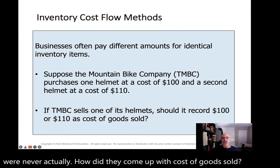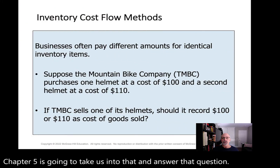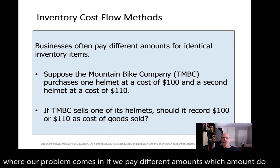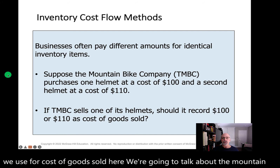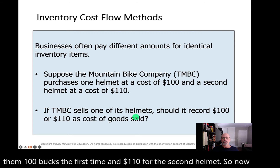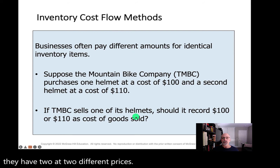Businesses often pay different amounts for identical inventory items, and this is where our problem comes in. If we pay different amounts, which amount do we use for cost of goods sold? Here we're going to talk about the mountain bike company, TMBC. They purchased one helmet and it cost them $100 the first time and $110 for the second helmet. So now they have two at two different prices. If they sell one of the helmets, what's their cost of goods sold — is it $100 or $110?